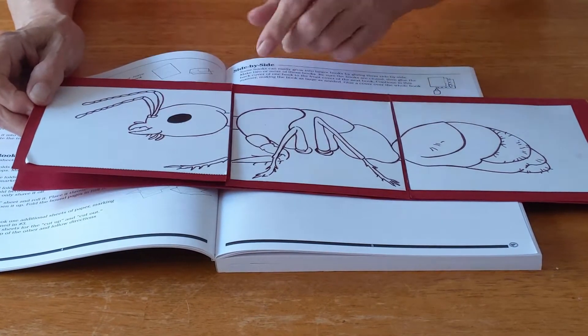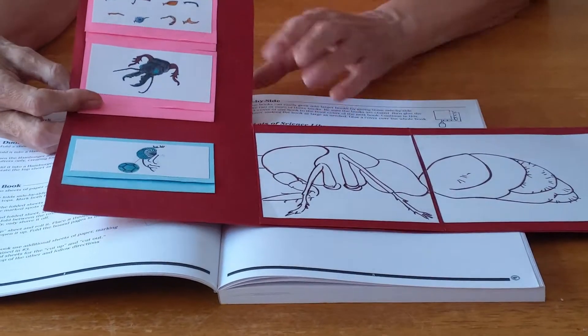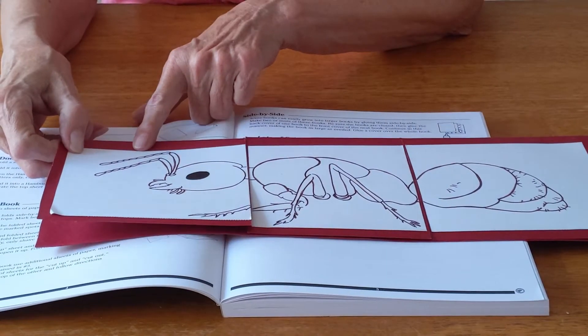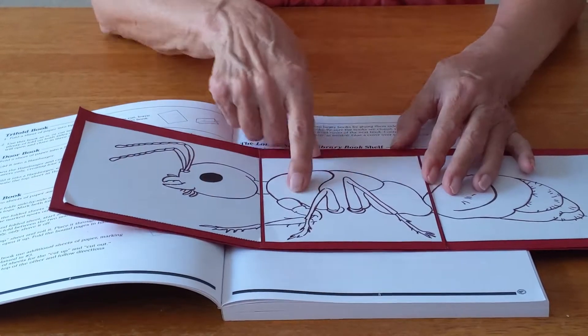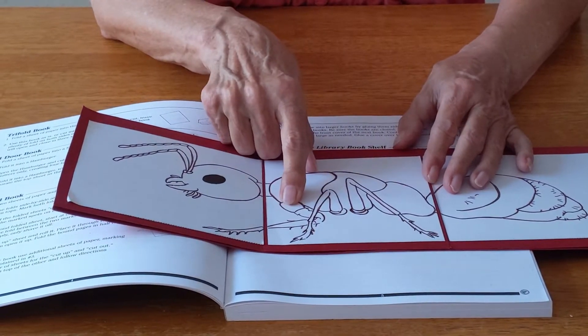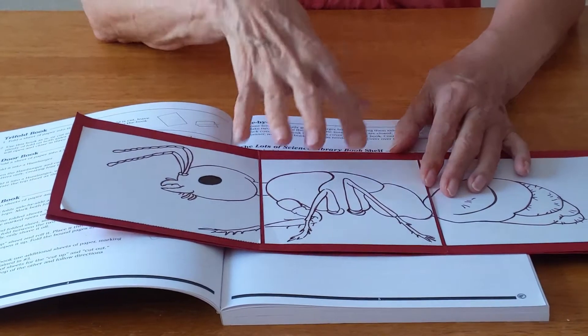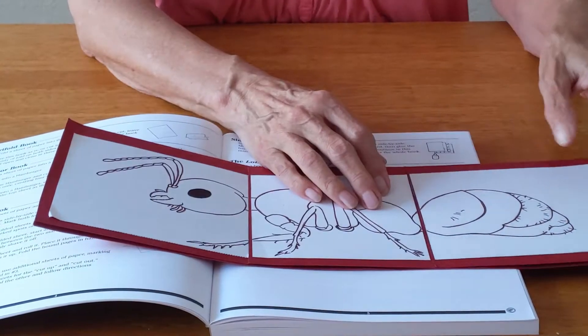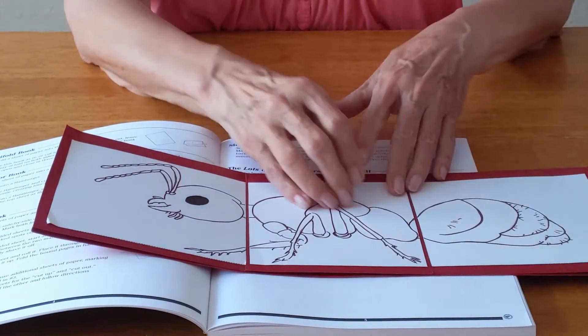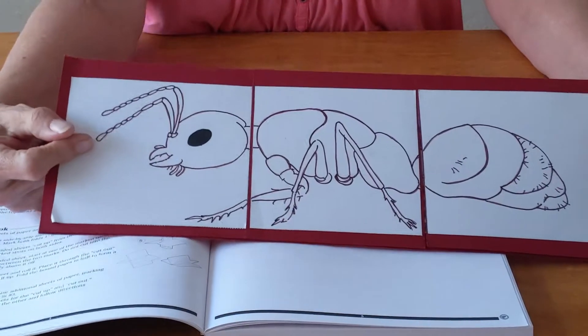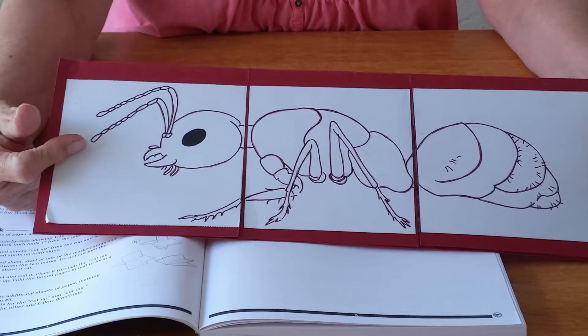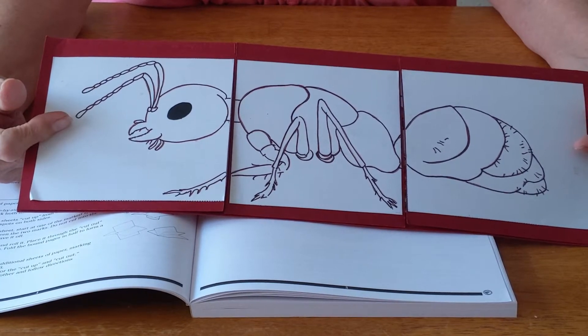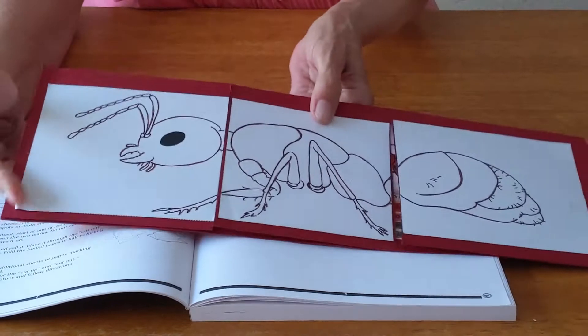As the student works throughout the program they continue to use this graphic organizer. When they learn about the mouth parts of an insect they will put the information under the head because that's where the mouth parts are. The same with the eyes and the antenna. All insects have six legs attached to the thorax. Over the weeks as the students are working with this organizer they are constantly reviewing and reinforcing that knowledge.